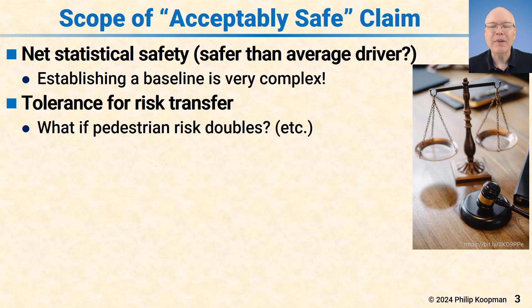One of them is tolerance for risk transfer. Hypothetically, what if the number of total fatalities gets cut in half but the number of pedestrian fatalities double? That's going to be a problem even though the net harm has been reduced.